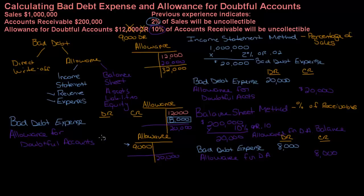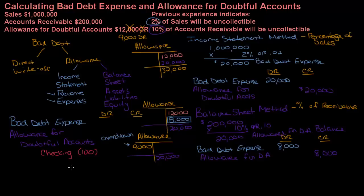An overdrawn allowance account means I did not allocate enough bad debt expense for all of the debts that went bad. So I not only need to cover the nine thousand dollar deficit, but I also need to get to a twenty thousand dollar balance. Think of it like a checking account: if your account is one hundred dollars overdrawn and you need to pay five hundred dollars in rent, you need to deposit six hundred dollars so your rent check doesn't bounce — you cover the hundred you're overdrawn plus the five hundred for the check.